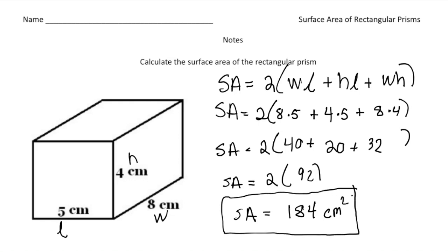There it is! The big thing to remember — put a star here — is the formula you need to find the surface area of a rectangular prism. Go ahead and pause the video to try the Your Turn Now problem, and when you're done, hit play and you can see how you did. Good luck!